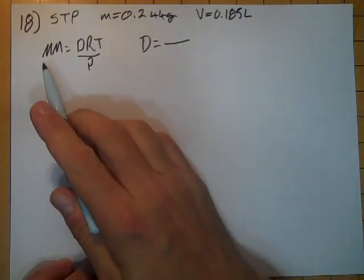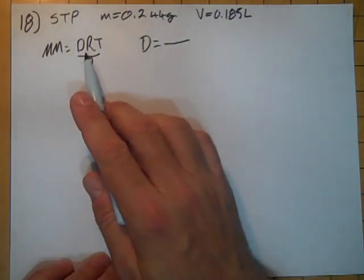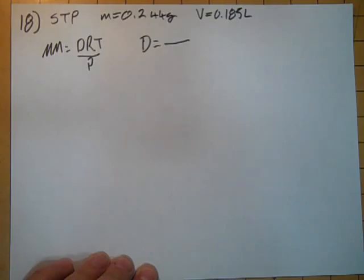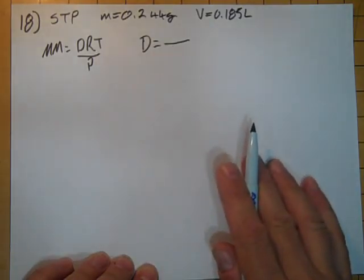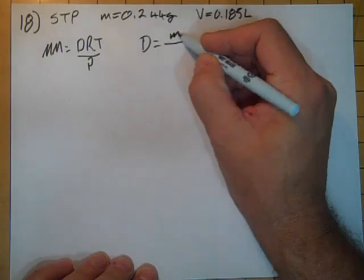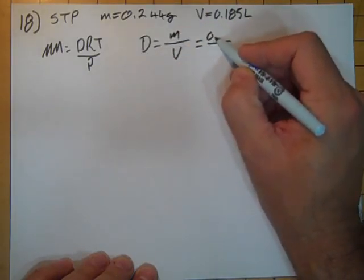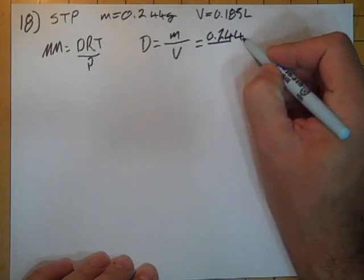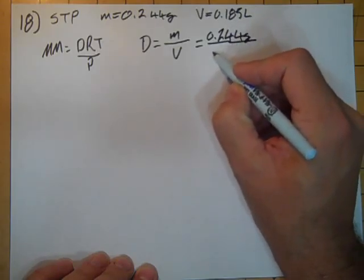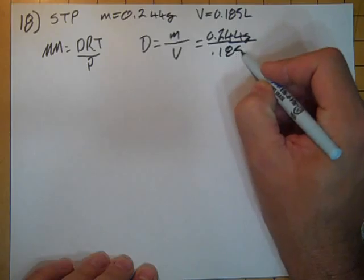And I'm going to be using my equation that the molar mass is density times R times T divided by P. So I need to find density and density is just mass divided by volume, which means that density is 0.244 grams divided by 0.185 liters.